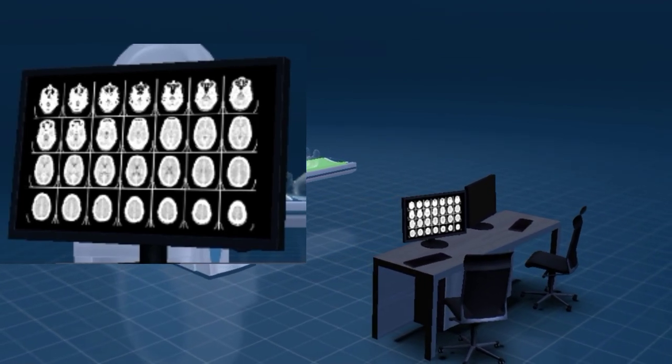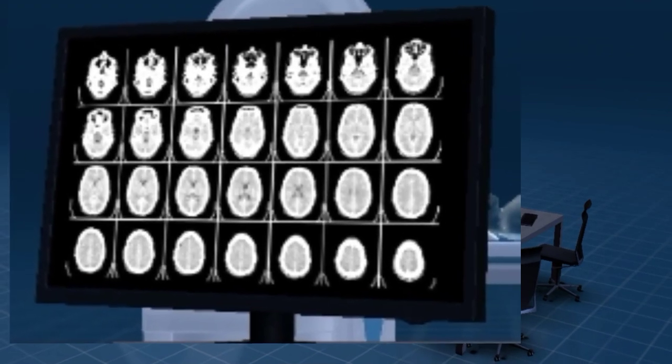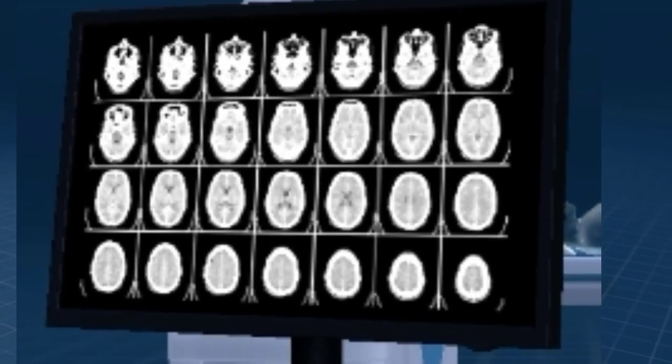In CT scans, the areas that absorb radiation to the greatest extent appear white, while those that do not absorb x-rays show as black. Bones are seen as white, air appears black. Soft tissues are indicated by shades of light grey, and fat is shown in dark grey.